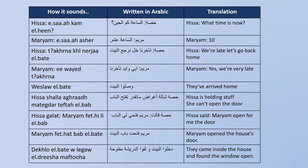Maryam continues: 'taa akharna, khal narja elbeet' — we're late, let's go back home. 'Khal' means let's, 'narja' means go back, 'elbeet' means the house. Maryam then says 'ii, waaid taa akharna' — yes, we're very late. 'Ii' means yes, 'waaid' means very, 'taa akharna' means we're late.